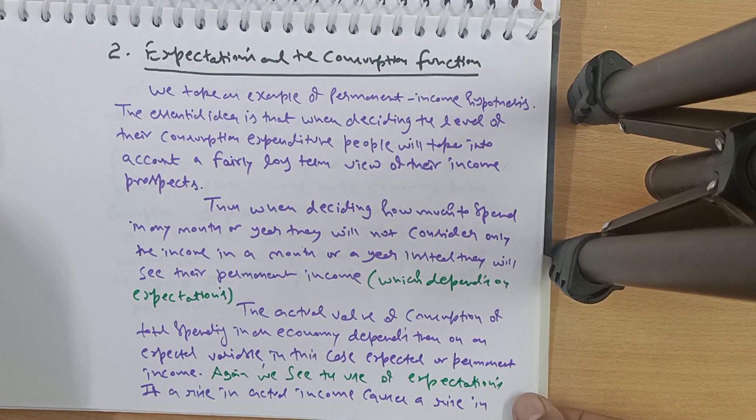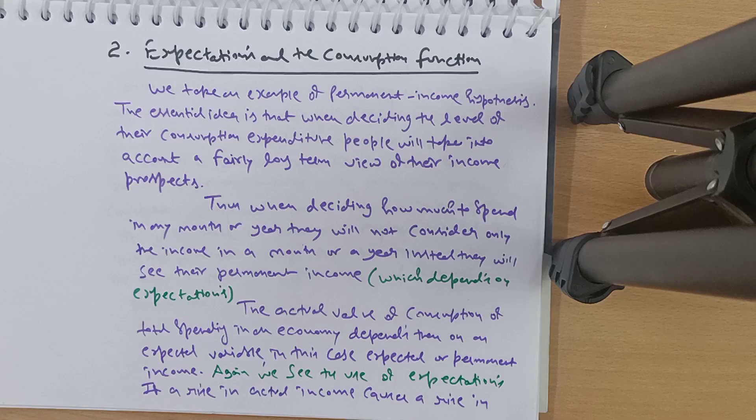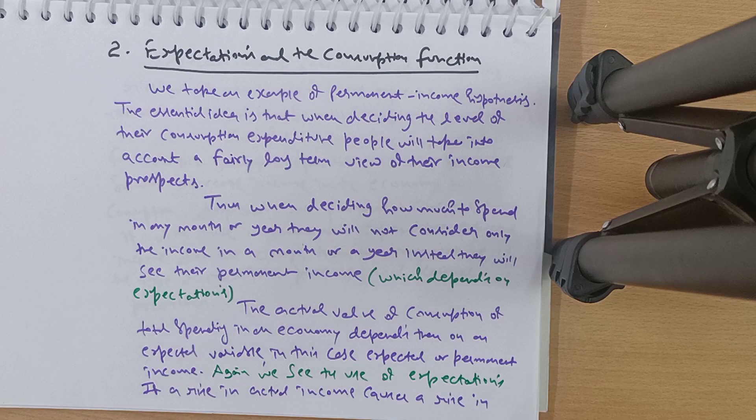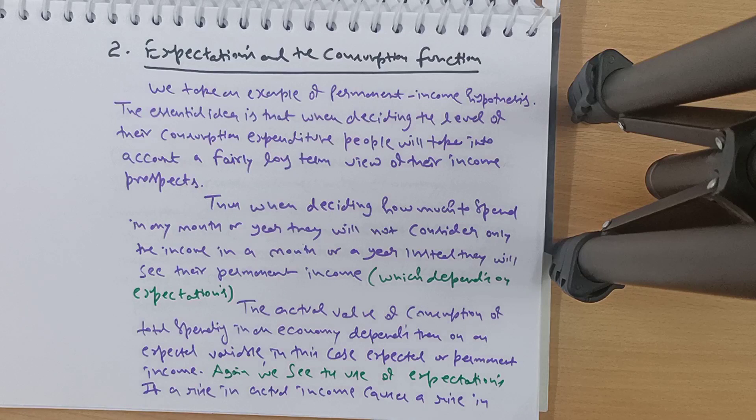The second example is expectations and the consumption function, which we will also cover in unit 4. We take the example of the permanent income hypothesis. The essential idea is that when deciding their level of consumption expenditure, people take a fairly long-term view of their income prospects. A poor person working on daily wages will think twice before extra spending because they are unsure about future income.